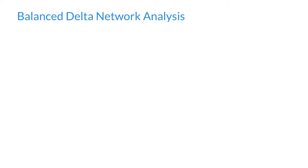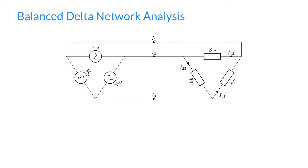Here's an example of a delta network. We have three voltage sources connected in a triangular arrangement, connected by three lines to another triangular arrangement — our delta connected load made up of three impedances. One little difference in notation compared to the star network video: we just called voltages V1, V2, and V3, and similarly Z1, Z2, and Z3.